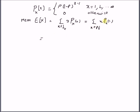By inserting the definition of the probability mass function, we have the sum from x equals 1 to infinity of x times p times (1-p)^(x-1).